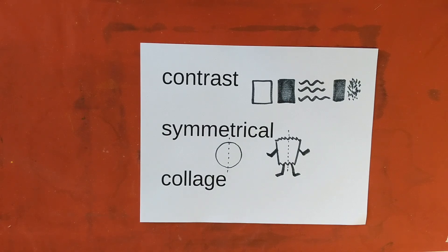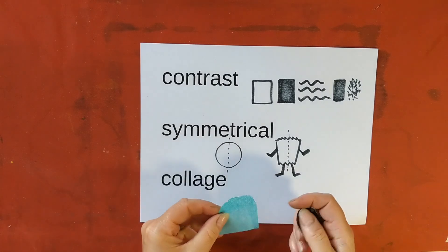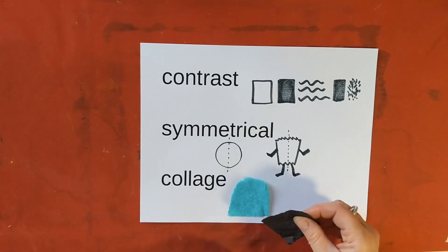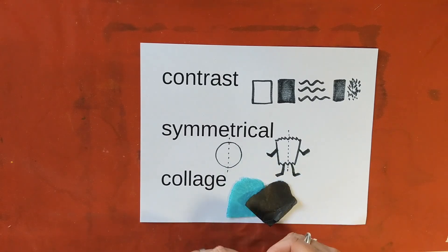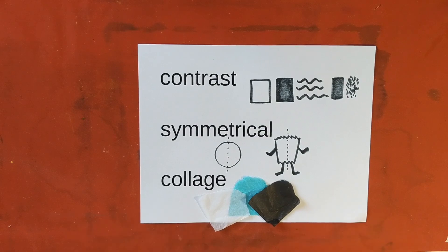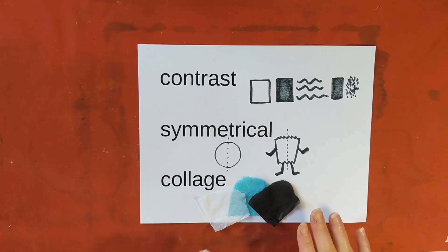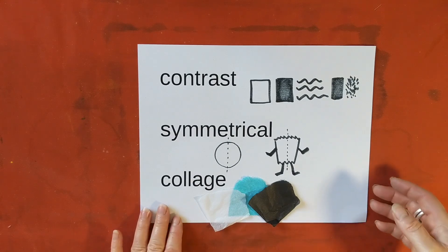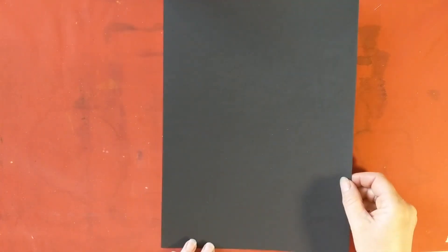Collage is the idea of using pieces of paper or fabric or different materials, which you could tear or cut and stick down together to make a picture. Sometimes it could be something realistic, sometimes something quite abstract, but it's using different materials to come up with an image that has some interest to it. Our monster today is going to be made using collage.